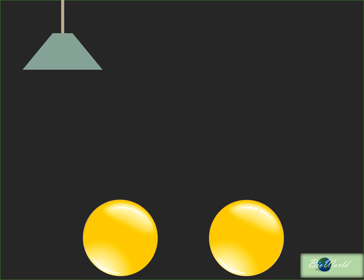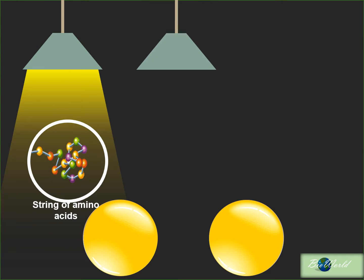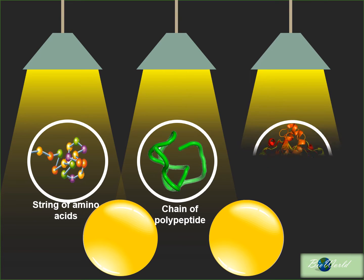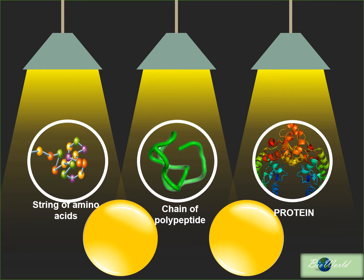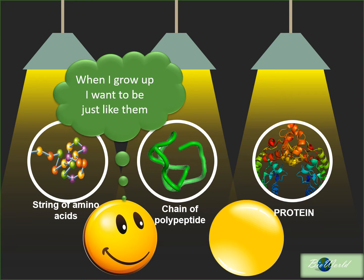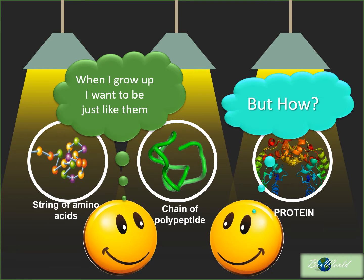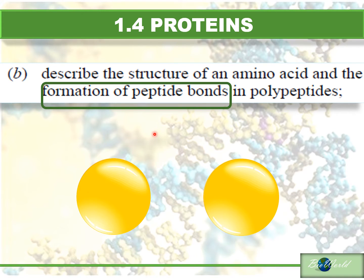Imagine if you were these amino acids watching the display of the string of amino acids, the chain of polypeptides as well as the large protein molecules. Don't you think as an amino acid you will wonder how can you become a large macromolecule? Well, the secret to it is in today's episode of BioWorld. We are going to learn about the formation of peptide bonds in polypeptides.